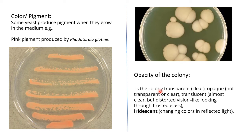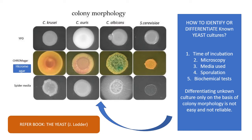Opacity describes whether the colony is transparent — meaning clear — opaque — meaning not transparent — or translucent, which is almost clear but not directly transparent and distorts vision like looking through frosted glass. Depending on the ability to pass light through the colony, you report the opacity. Shown here is an opaque yeast culture, where light cannot pass through the colony.